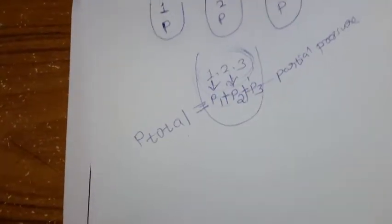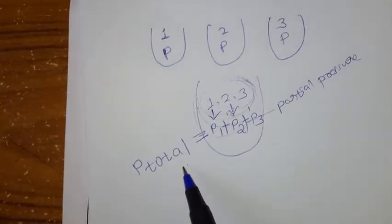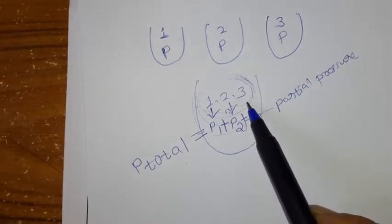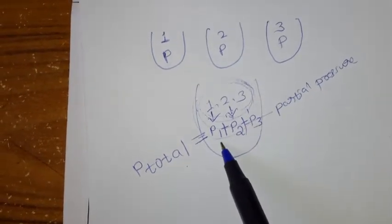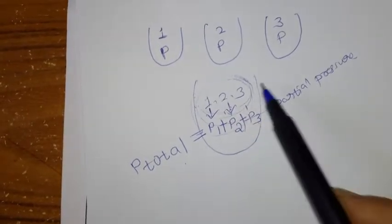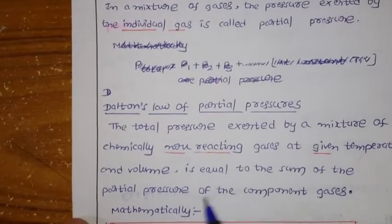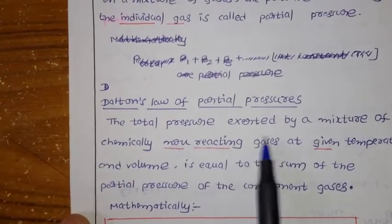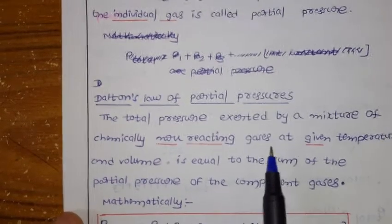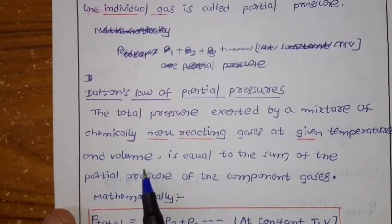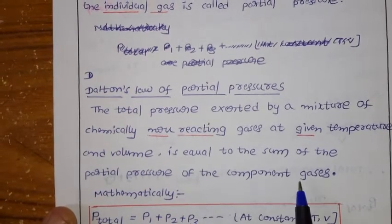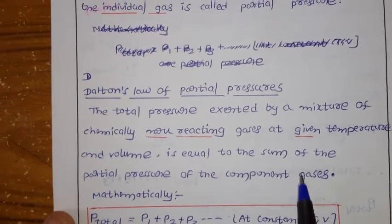You should be very careful. In a problem, check whether they are giving total pressure or partial pressure. In the mixture, the pressure exerted by each gas is the partial pressure. Add all pressures together and you get P total. The total pressure exerted by a mixture of chemically non-reacting gases at a given temperature and volume is equal to the sum of the partial pressures of the component gases.